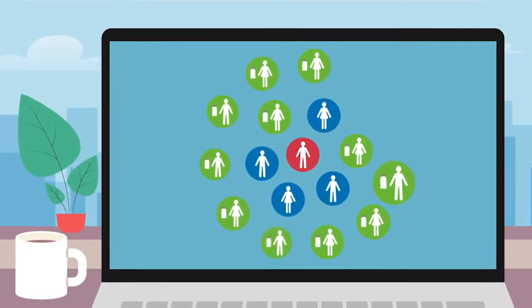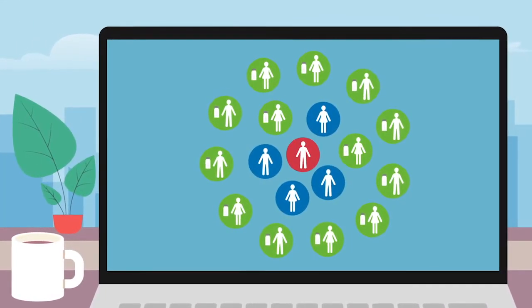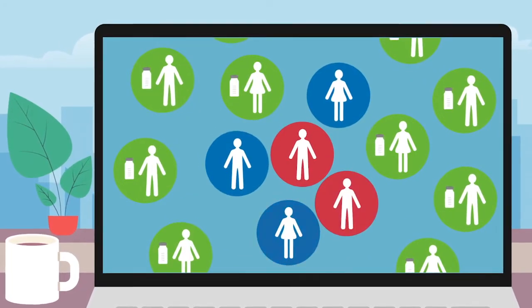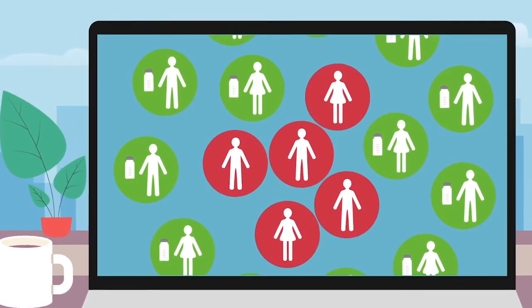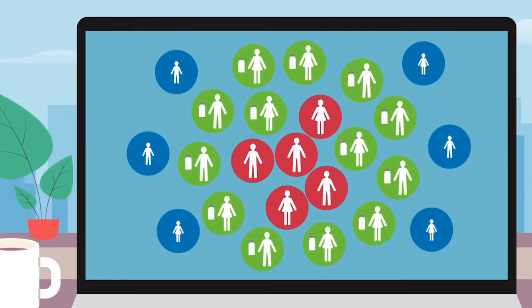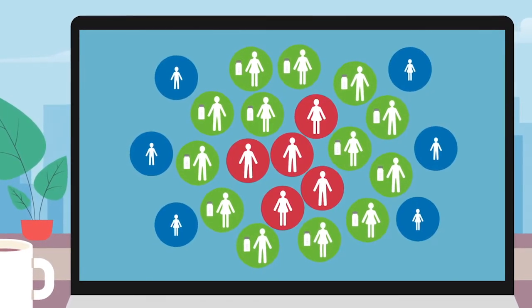Vaccines do not only protect the people who receive them. Just like an invisible shield, vaccination prevents a disease from spreading to people who cannot be vaccinated, like people with weak immune systems or children who are too young.